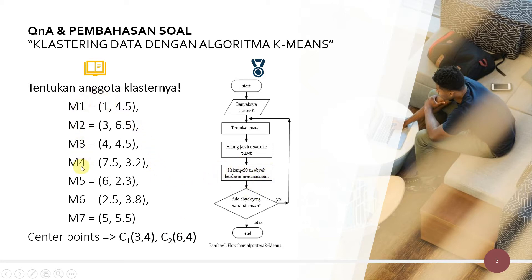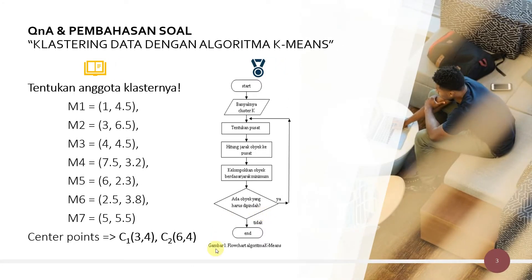Nanti kita cari jarak yang paling dekat untuk masuk ke dalam anggotanya. Kemudian, kelompokkan semua objek berdasarkan jarak yang paling minimum. Jadi M1 sampai M7, kita hitung jaraknya terhadap pusat cluster pertama dan kedua — yang paling dekat yang mana, nanti itu yang masuk ke dalam anggotanya. Iterasi ini berlangsung minimal 2 kali, sampai anggota tidak berubah lagi. Kalau masih ada yang berubah, ulangi iterasi. Kalau tidak ada yang berubah, maka berhenti.